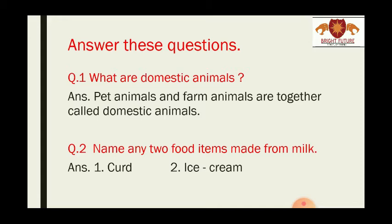Next question: N-A-M-E A-N-Y T-W-O F-O-O-D items M-A-D-E from M-I-L-K. Name any two food items made from milk. Milk se bahut saari cheezein banti hain — mithai, ice cream, curd, butter, cheese — sab milk se banta hai. So the answer is C-U-R-D curd, it means dahi, and I-C-E-C-R-E-A-M ice cream.